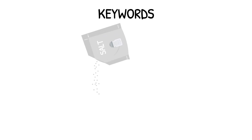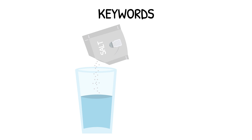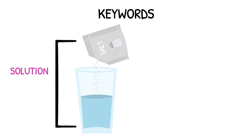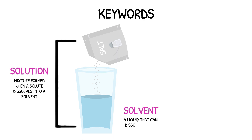When salt is added to water, something interesting happens. The salt molecules mix with the water molecules and appear to disappear. In chemistry, we say that the salt has dissolved. Together, the salt and water form a mixture called a solution. A solution is the mixture formed when a solute dissolves into a solvent.